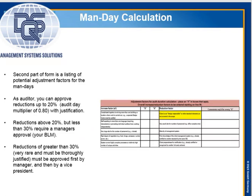The second part of the form is a listing of the potential adjustment factors for the mandates. As an auditor, you can approve reductions up to 20% — that's a 0.8 multiplier — with a justification. Reductions above 20% but less than 30% require a manager's approval, and if we're going to go above 30%, it must be approved by a vice president. Cases of above 30% reduction are very rare.